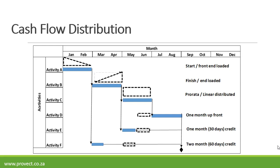Activity E represents your one month or 30-day credit — so if the activity takes place in May, you need to pay in June. Activity F represents a two month or 60-day credit — if the activity takes place in March, payment is due in May.